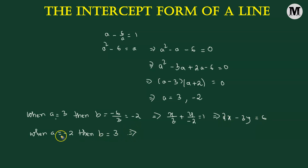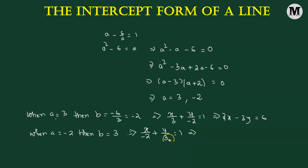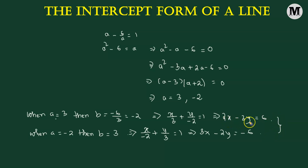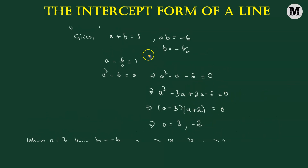For the second pair, A equals negative two and B equals three, we get X divided by negative two plus Y divided by three equals one. Multiplying throughout by negative six gives us three X minus two Y equals negative six. So we have two equations, meaning there are two lines: two X minus three Y equals six, and three X minus two Y equals negative six. In both cases, the sum of the intercepts is one and the product is negative six.